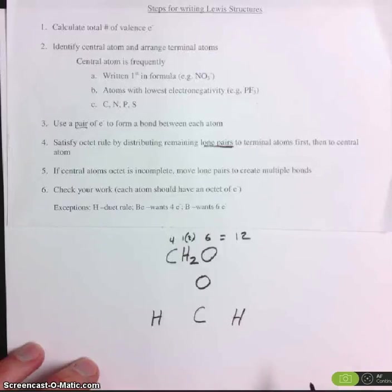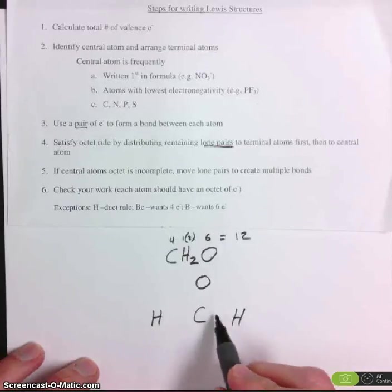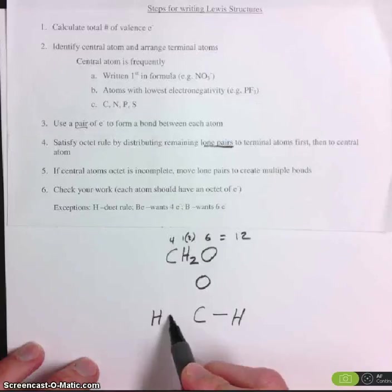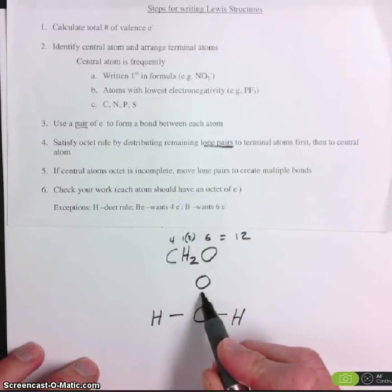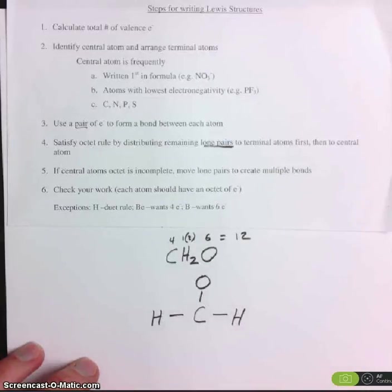So we have twelve electrons. Let's form a bond between each. There's two, four, six. Now we have six electrons left to distribute.